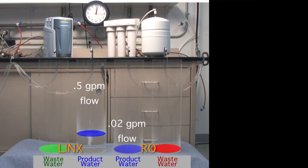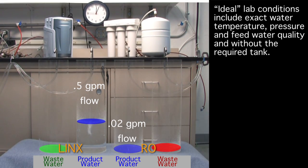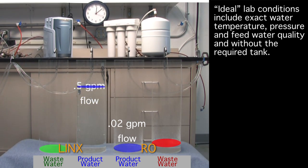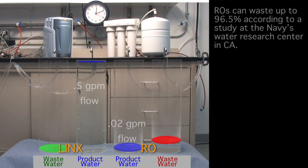Under ideal lab conditions, RO systems waste between 50 and 75 percent of the water, meaning at best they waste one to three gallons of water for each gallon of drinking water produced.